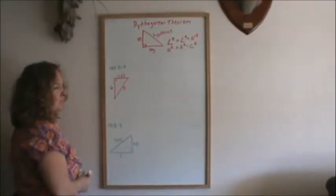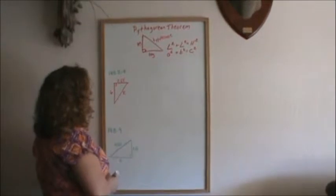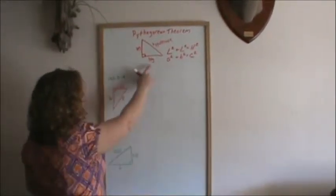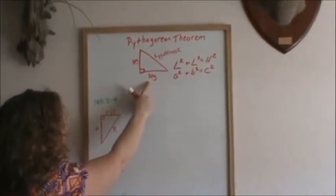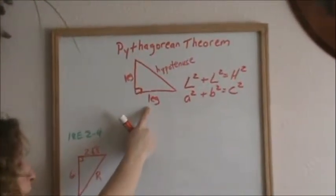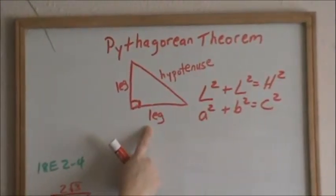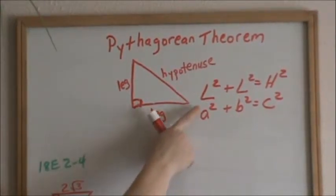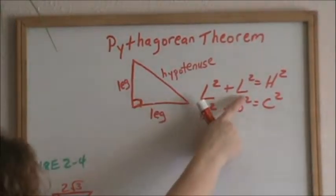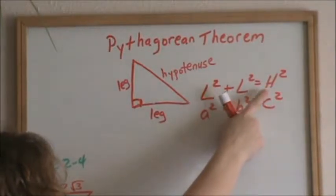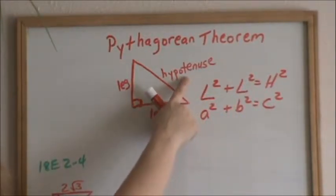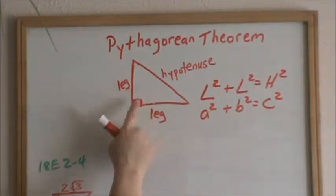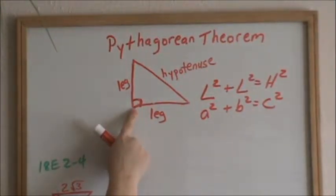Thanks for tuning back in to Pocket Ronnie. Now we are going to do a Pythagorean Theorem with Radicals. Remember, Pythagorean Theorem is only used for right triangles. Here's a right triangle. Pythagorean Theorem is leg squared plus leg squared equals hypotenuse squared. The hypotenuse is always the longest side of a right triangle and it is always across from the 90 degree angle.